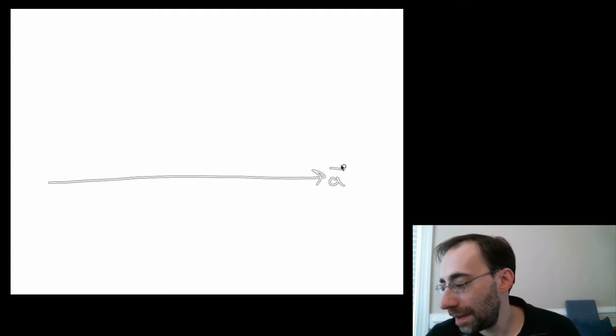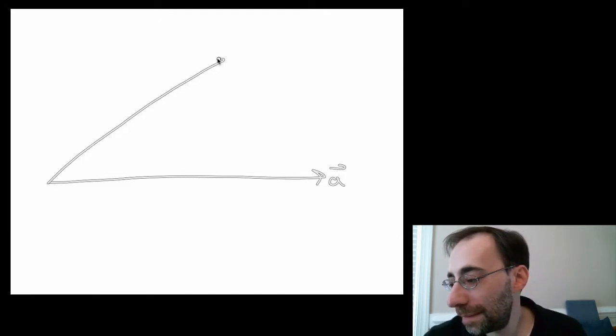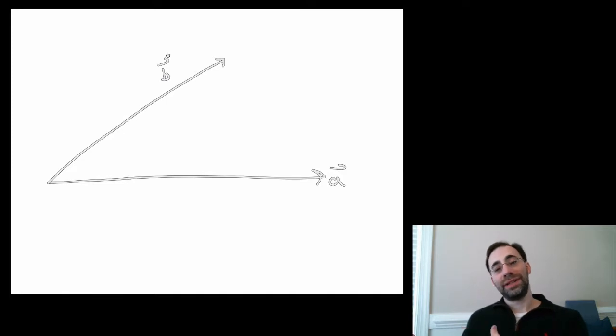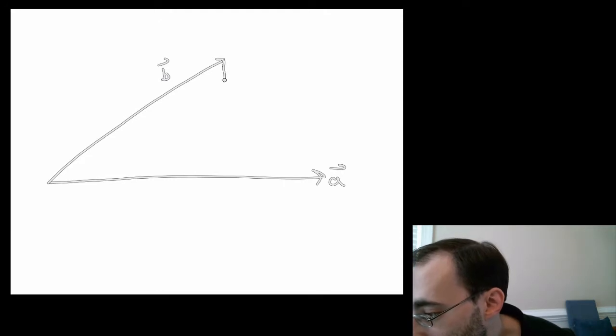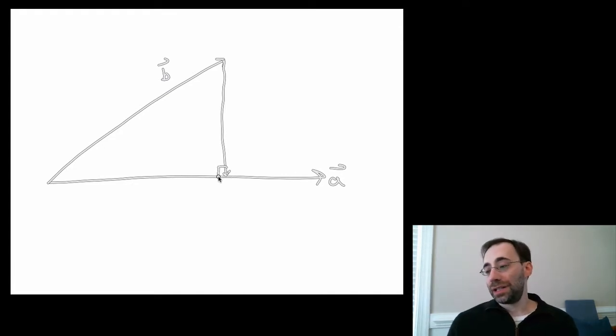So let's start by taking a vector a. I'll make it horizontal for the purpose of this example, and a vector b. And if the goal is to understand how b projects onto a, so the part of b that is the same line as a, one way to address this is by dropping a perpendicular line from b. And this is perpendicular. And that causes this triangle to be a 90 degree triangle, a right triangle.